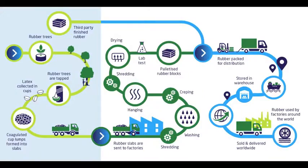Rubber has been described as the fourth most important natural resource in the world. Vulcanised rubber was a revolutionary breakthrough and its discovery allowed for the invention of many products that have shaped the modern world today. These products include...